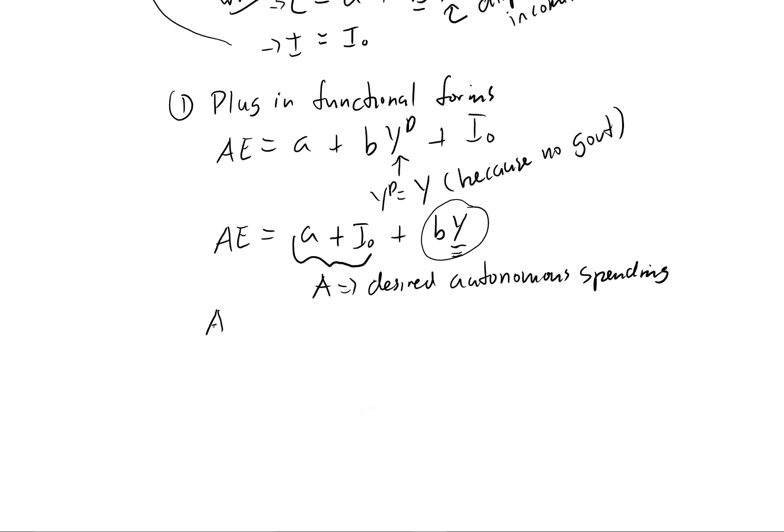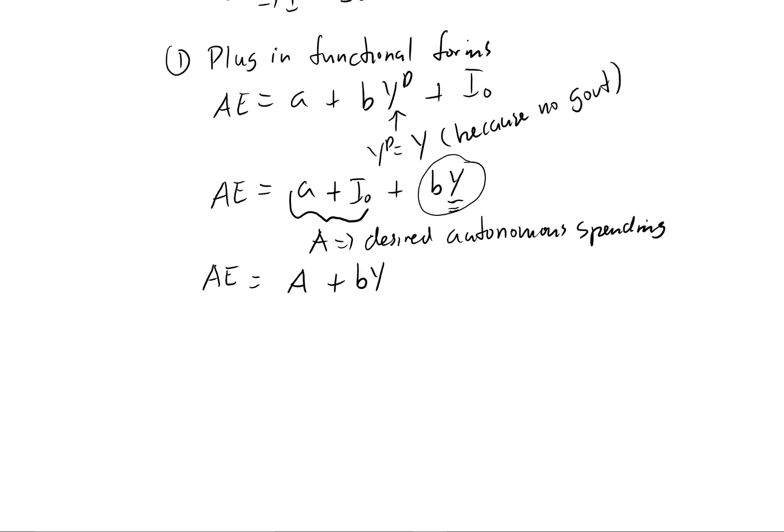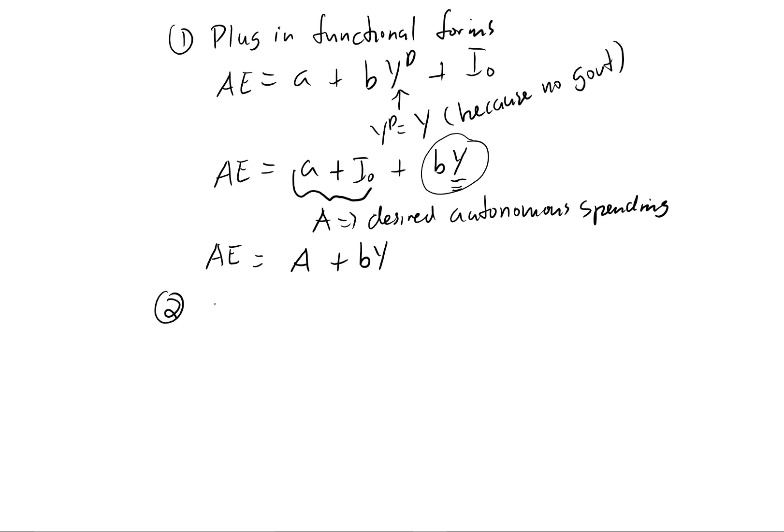Okay, so we can simply write this AE equals capital A plus BY. Alright, so now this looks nice and simple, we can move on to our next step. So our next step is simply to invoke our equilibrium condition.